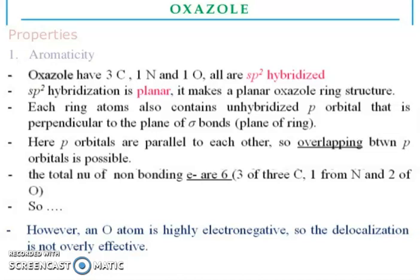Each ring atom also contains an unhybridized p-orbital that is perpendicular to the plane of the sigma bonds, the plane of the ring. Here the p-orbitals are parallel to each other, so overlapping between p-orbitals is possible. The total number of pi electrons are six — three from three carbons, one from one nitrogen, and two from the oxygen. So, we have aromaticity. However, the oxygen atom is highly electronegative, so delocalization is not overly effective.